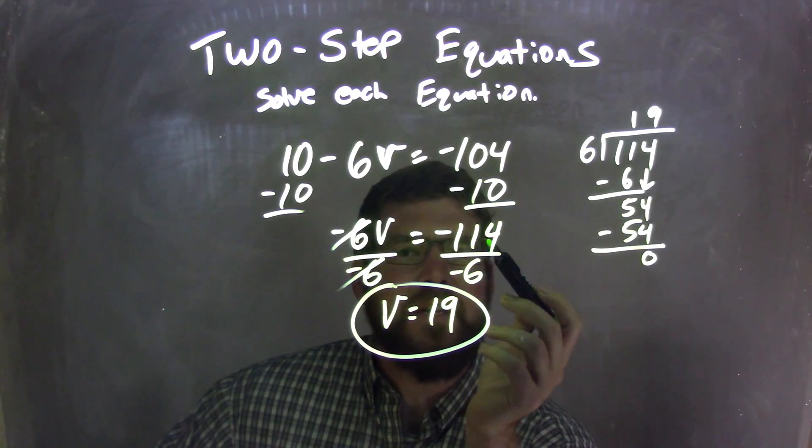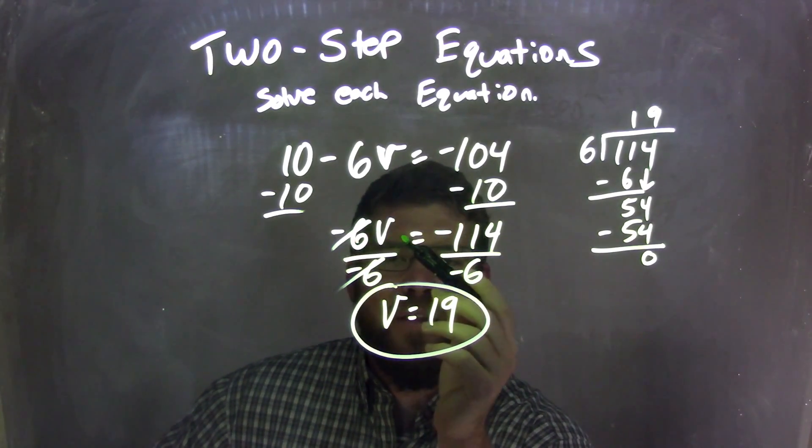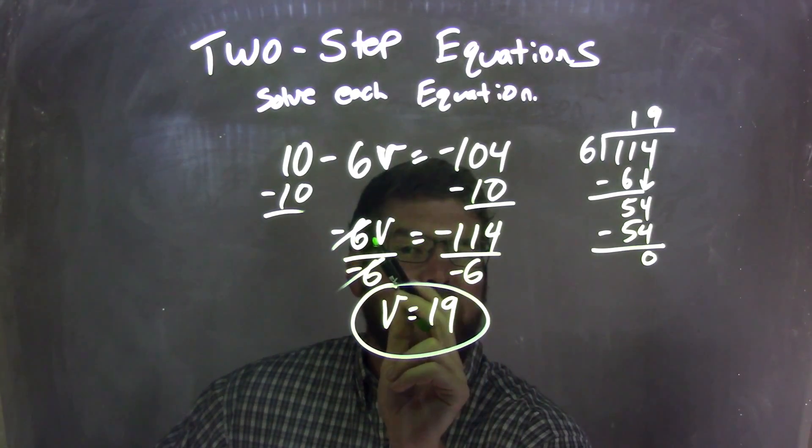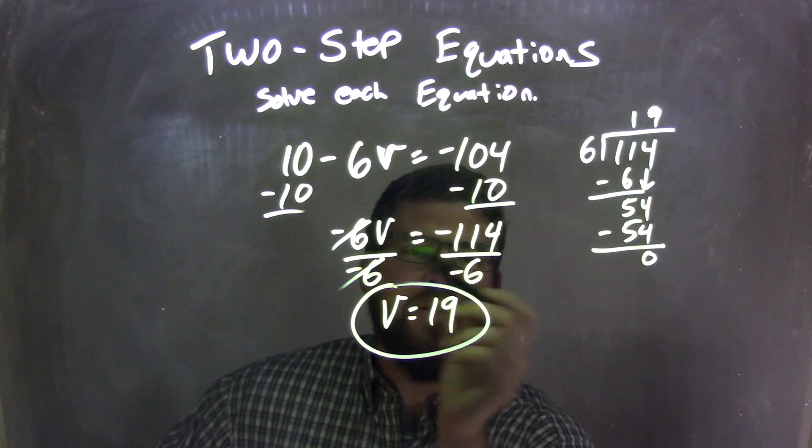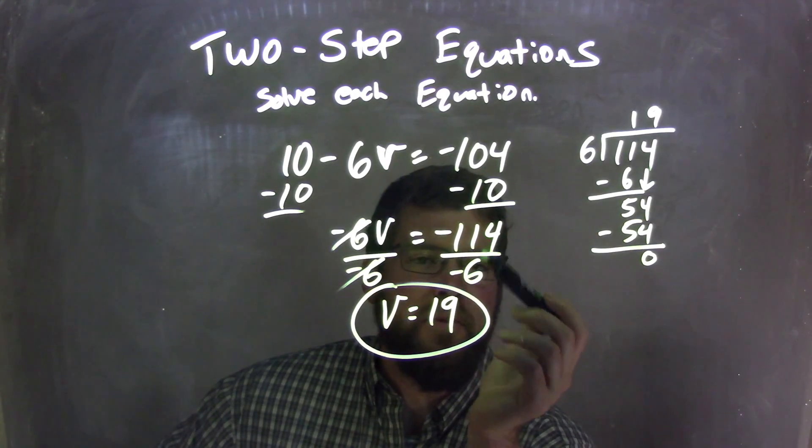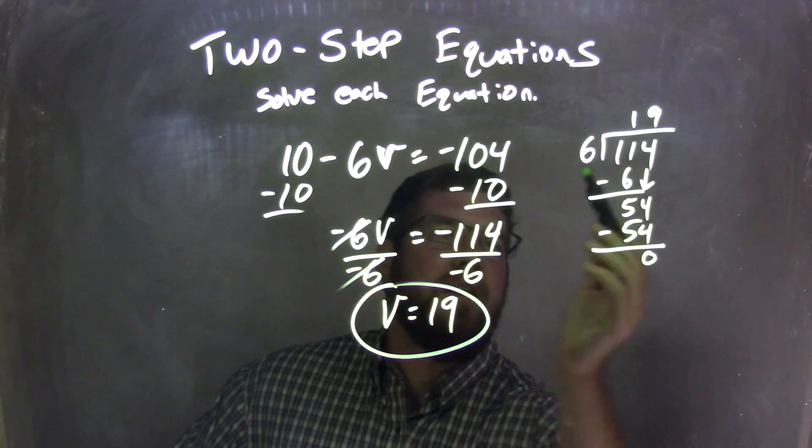I have a negative 114 here, and I had a negative 6V on the left. I then divided by negative 6 because it's the opposite of multiplication that's going on in the division. Divide negative 6 from both sides, leaving me V equals whatever negative 114 divided by negative 6.